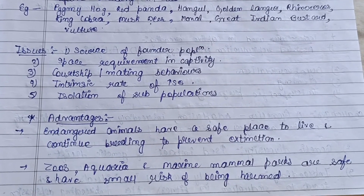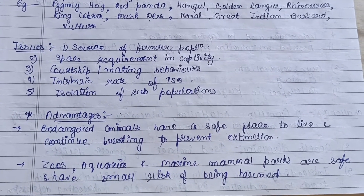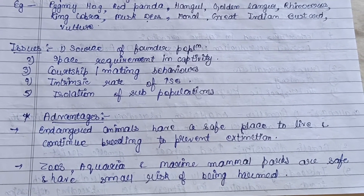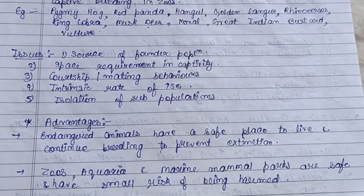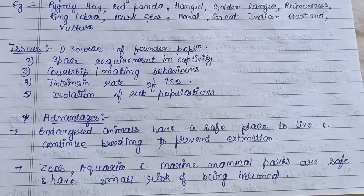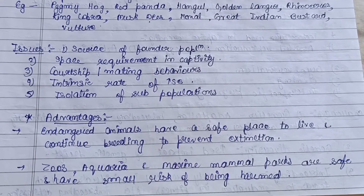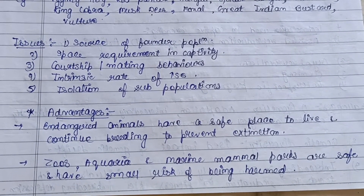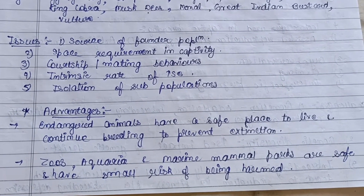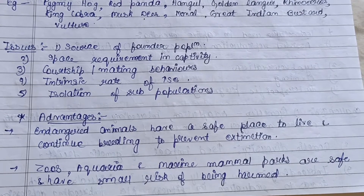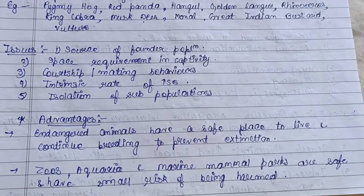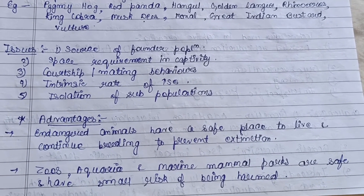The advantages of captive breeding: first, endangered animals have a safe place to live and continue breeding to prevent extinction. Second, zoos, aquaria, and marine mammal parks are safe and carry small risk of harm to the animals.